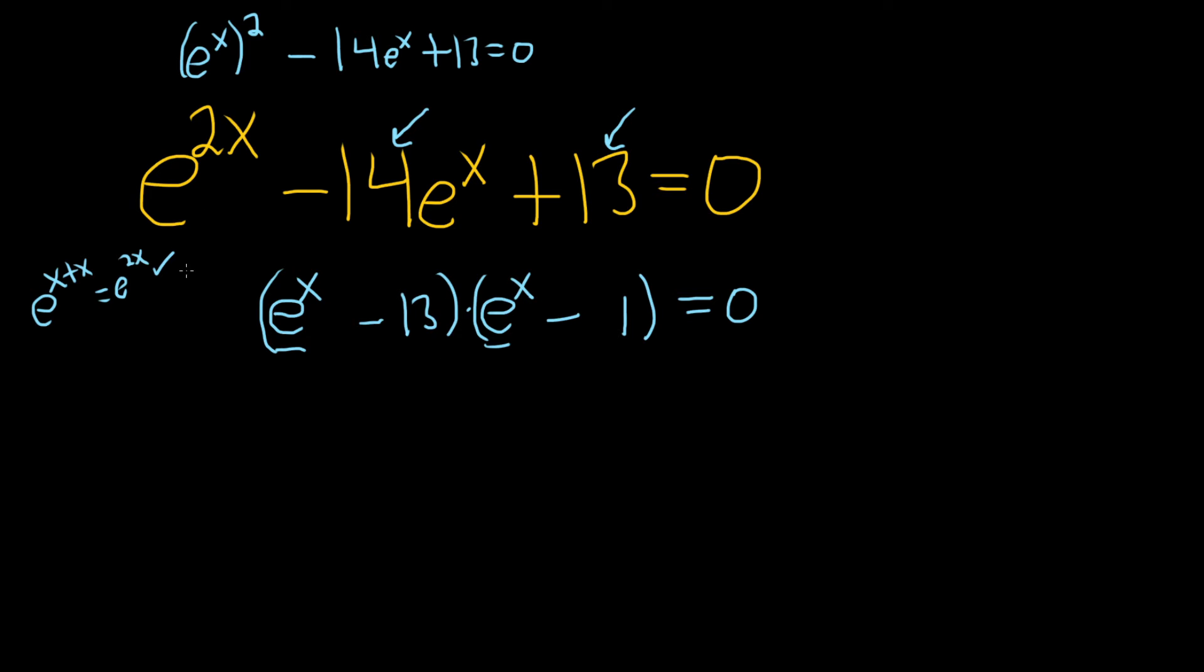And how do you know to do this? Whenever you see a problem like this with an e to the 2x and an e to the x and a number, it's one of these. It will always factor. It's like rigged.